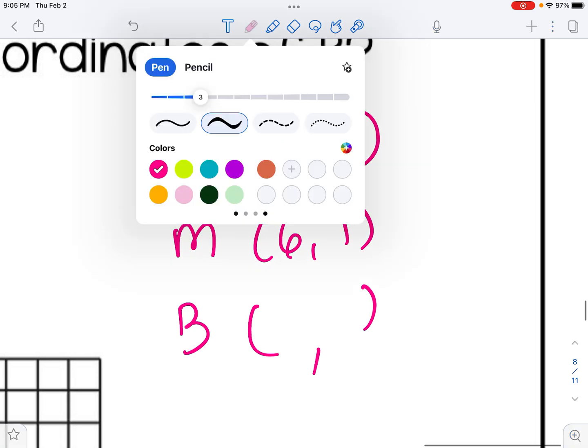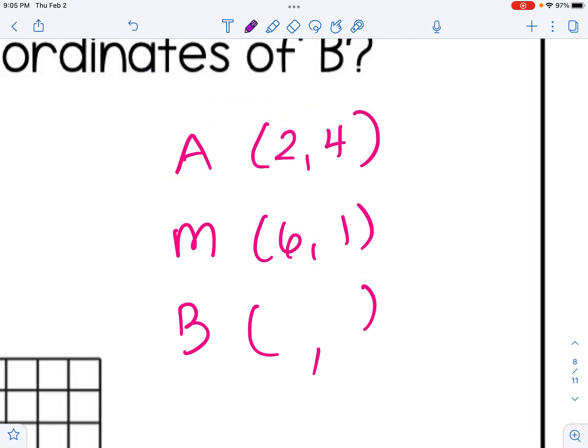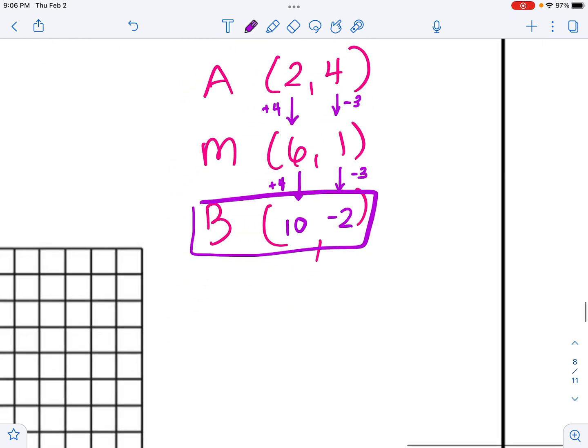So I'm going to look for a pattern between the coordinates. I can see from A to M, the x coordinate increased by 4. So I'm going to increase by 4 again, and my new x coordinate is 10. I can see the y coordinates went down by 3, so I'm going to go down by 3 again, continuing that pattern. And I get (10, -2) is my answer. Now, for any of these where you're finding an endpoint, there's a really easy way to check your answer. And that's just to use the midpoint formula that we've already talked about with the two endpoints. So if I use the midpoint formula here with our two endpoints, (2, 4) and (10, -2), I'm going to get 12 over 2, which is 6, then I'm going to get 2 over 2, which is 1. And that checks out and matches the midpoint we were given in this problem.